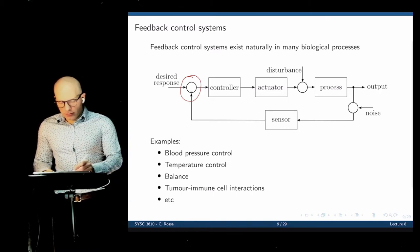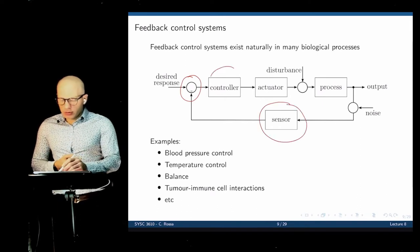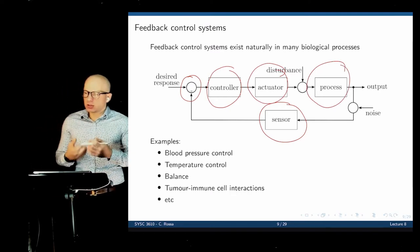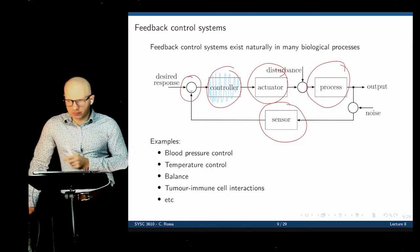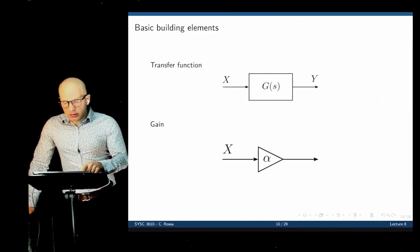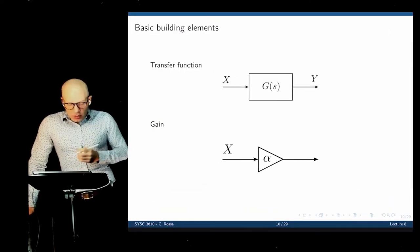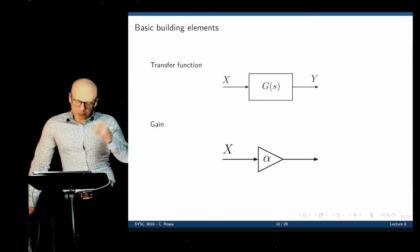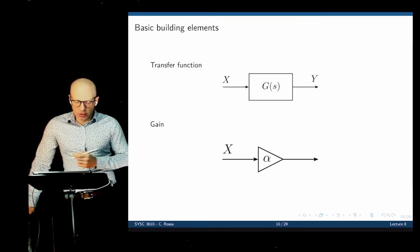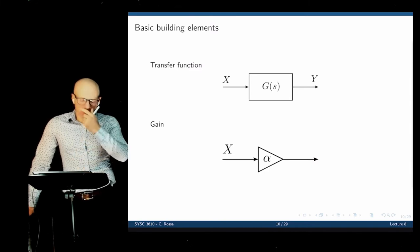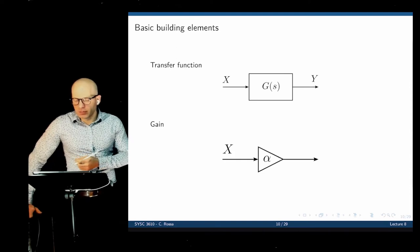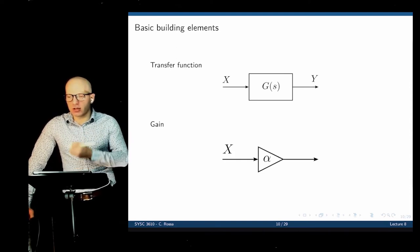Let's see how we can construct simulation diagrams. We'll represent them as blocks using a certain number of basic building elements that we'll use throughout the course, and you'll find them in Simulink. The first one is a transfer function block. When the block represents a transfer function, we give it an input X, we have the output Y, and G(s) is the transfer function. We can write that Y(s) equals X(s) times G(s). Transfer functions are typically put in rectangles or squares in simulation diagrams.